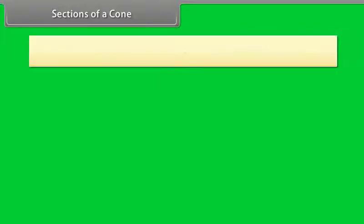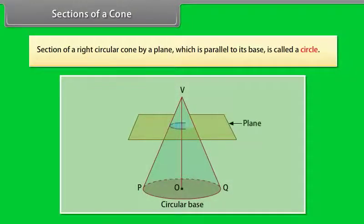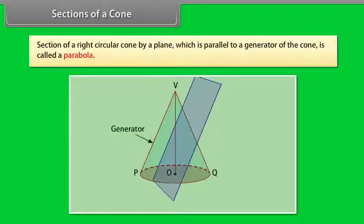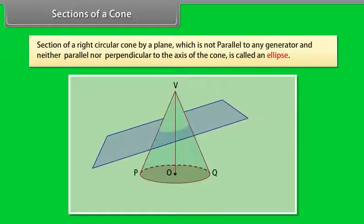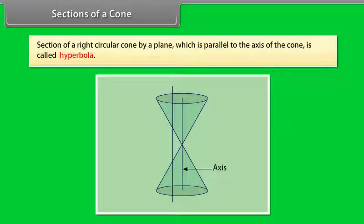Now we will discuss various sections of a right circular cone. Section of a right circular cone by a plane which is parallel to its base is called a circle. Section by a plane which is parallel to a generator of the cone is called a parabola. Section that is neither parallel nor perpendicular to the axis of the cone is called an ellipse. Section by a plane which is parallel to the axis of the cone is called hyperbola.